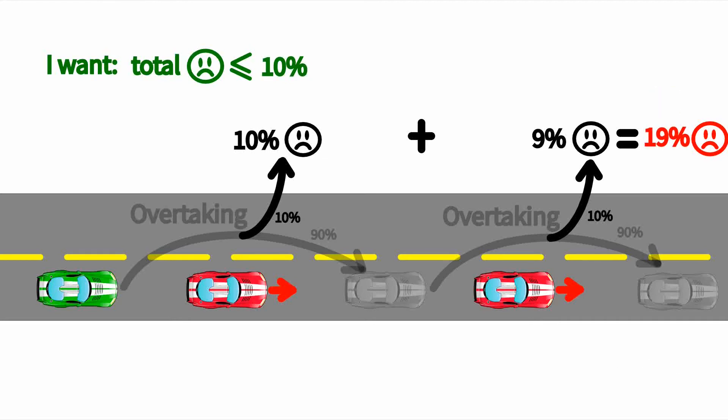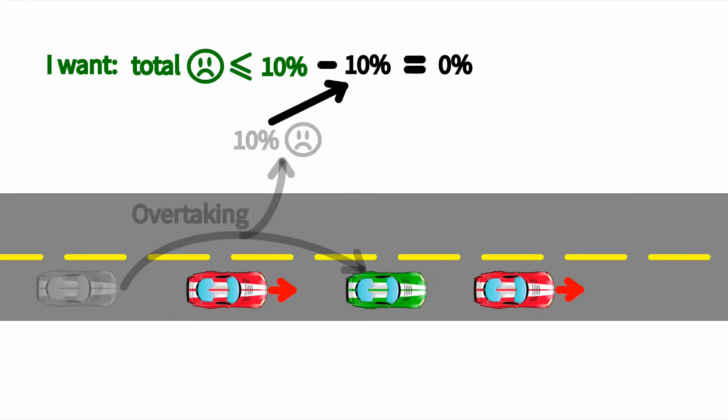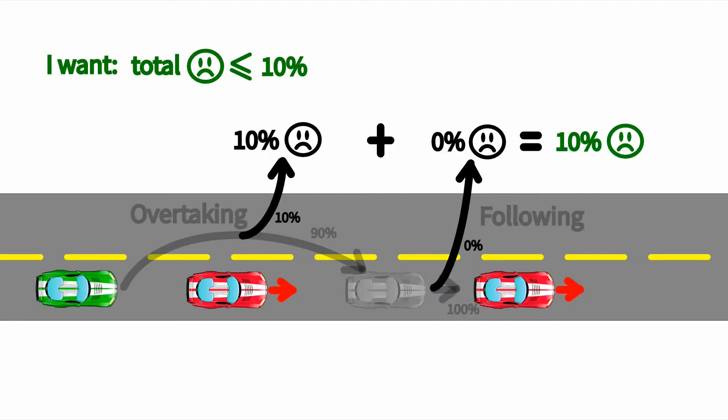This example motivates the key concept of our framework. Our approach subtracts out the 10% risk of the first overtake, then replans with the 0% chance constraint, which leads to following the second car. The total collision chance of this policy is 10%, which satisfies the chance constraint.